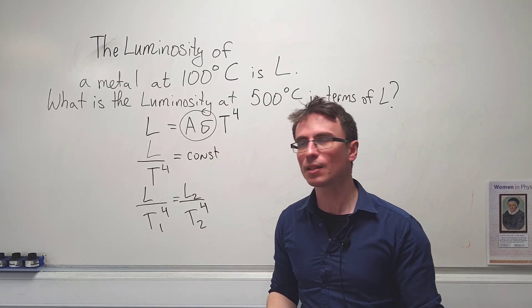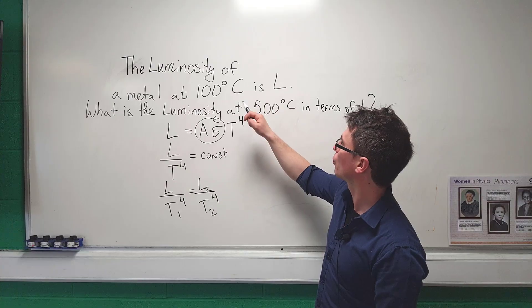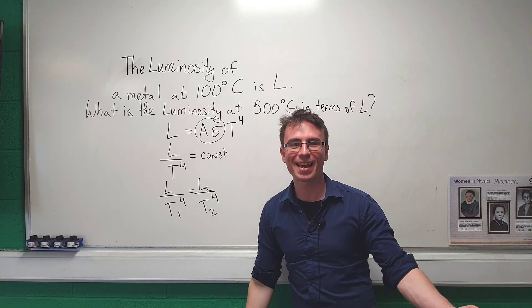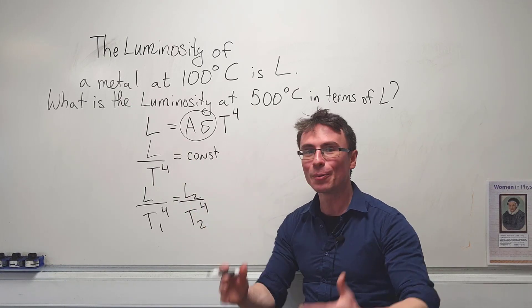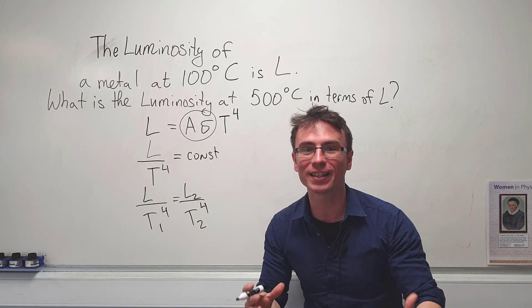I'm just going to remove this one here because we're given that the original luminosity is L. Now just by saying that L over T to the power of 4 is a constant we can directly find the answer.